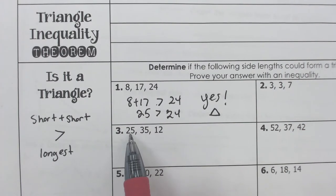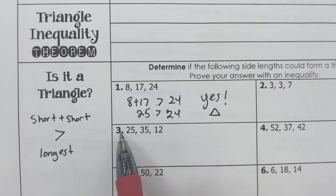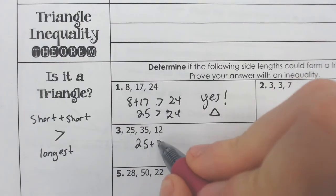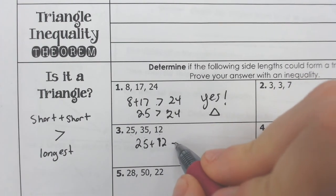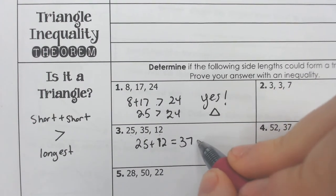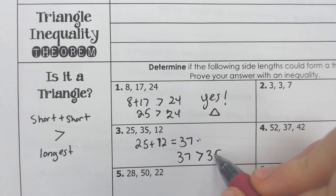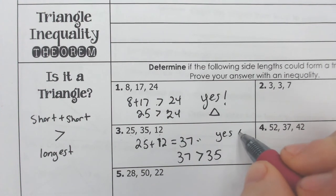Sometimes they try and throw you off where you got the 25 and the 12 here, those are the two short sides. You have to add those together and see if they're bigger than 35. Well, 25 and 12 is 37. Is 37 more than 35? It is. 37 is greater than 35. So again, this is yes, it's a triangle.